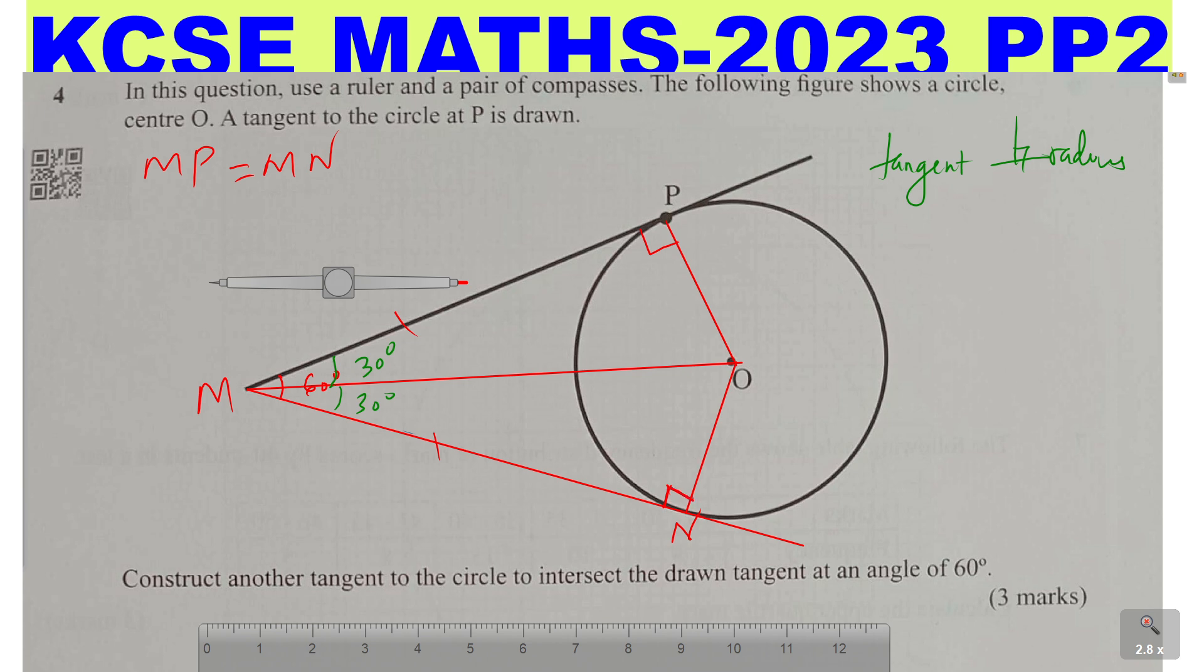This point where the tangent and the radius are meeting should be a right angle. Having known that, you'll be able to have an idea of how you're going to construct that tangent.